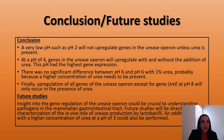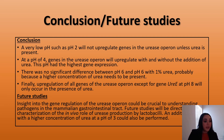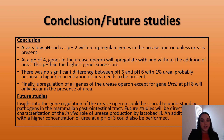In conclusion, a very low pH such as pH 2 will not upregulate genes alone; however, when urea is added, it will. At pH 4, genes in the urease operon will upregulate with and without the addition of urea, and this pH had the highest gene expression overall. There was no significant difference between pH 6 and pH 6 with 1% urea, which is probably due to needing a higher concentration of urea. Finally, upregulation of all genes in the urease operon — except for gene UreE — at pH 8 will only occur in the presence of urea, very similar results to pH 2.